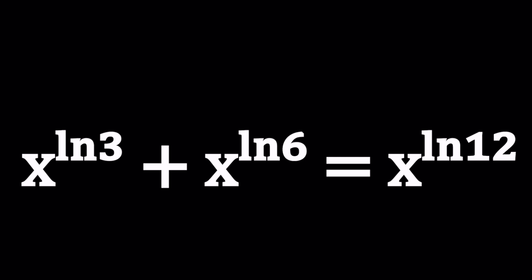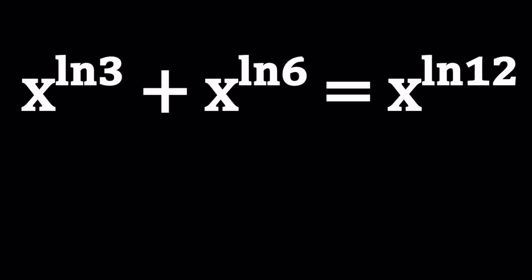Because if we had a polynomial, suppose instead of ln3, ln6, and ln12, we had something like x to the third, x to the sixth equals x to the twelfth. We could possibly solve this equation. At least we could find one solution, which is very obvious. Do you see it?